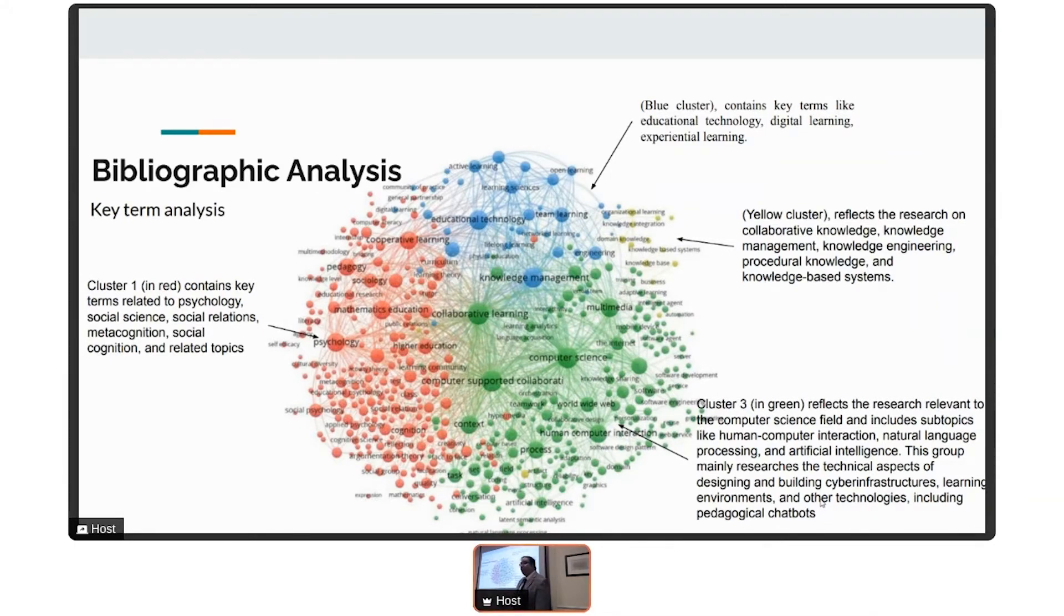This matches one of the themes that we found in the literature review. Another theme, which is the blue one, contains terms about technology, digital learning, education technology, experiential learning, and this matches the second theme that we found in the literature review. However, two more clusters showed up here that were not showing up in the literature review. The first one is a big cluster about computer science related papers that discuss the technical part, how we implement cyber infrastructures or online environments, and also this part related to artificial intelligence.